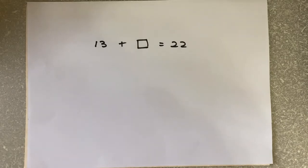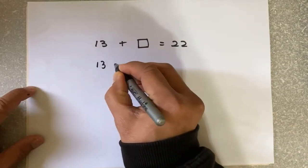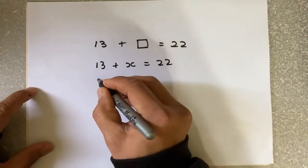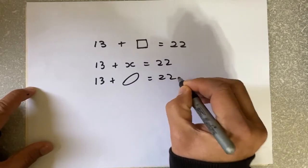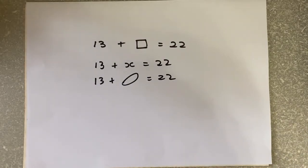In high school, instead of a box, we use symbols. It could be anything - a fish, a cat, a dog, or even a rugby ball. But for simplicity's sake, we represent that box with an alphabet. Normally, the common alphabet is the letter X. So we write 13 plus X equals 22, or it could be 13 plus a rugby ball equals 22. It's just a number that you don't know, represented with letters of the alphabet.